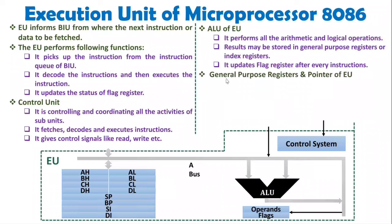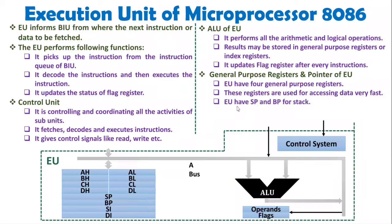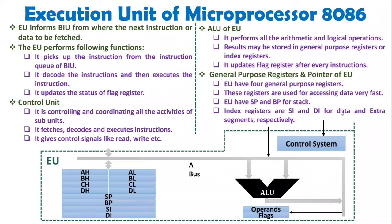The EU has four general purpose registers — AX, BX, CX, DX — which are very fast for data access. It also has Stack Pointer and Base Pointer for the Stack Segment, and index registers SI (Source Index) and DI (Destination Index) corresponding to the Data Segment and Extra Segment respectively. This completes the overview of the Execution Unit.